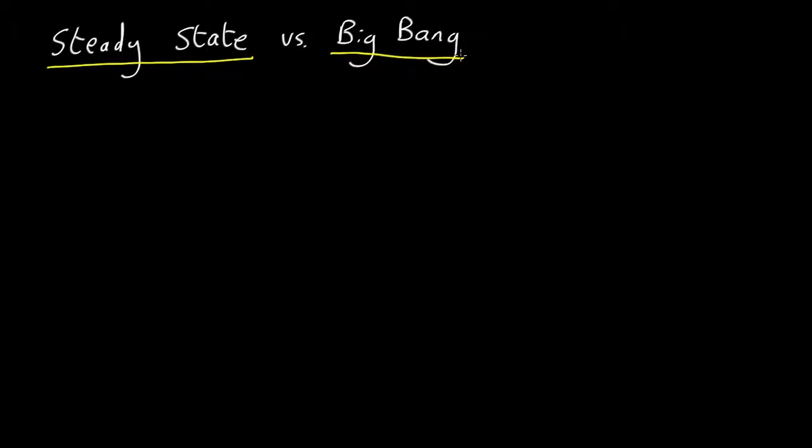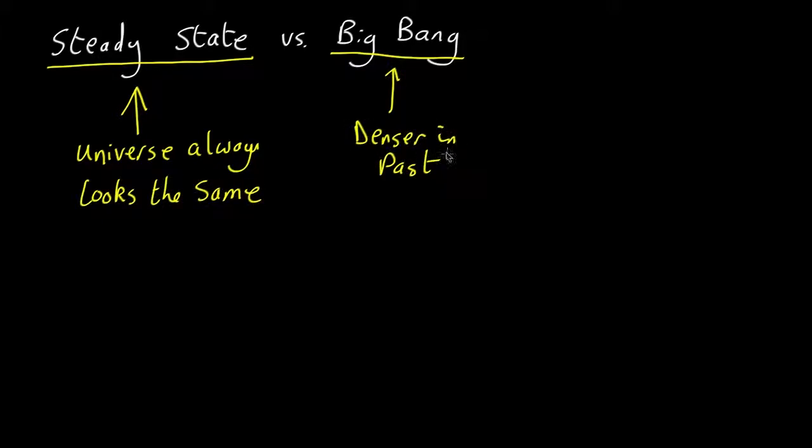There's a very clear test of these two models. The steady-state theory says the universe should always look the same, whereas the Big Bang theory says the universe should have an ever-decreasing density. So in principle, it's very easy to tell the difference. We just need a time machine.